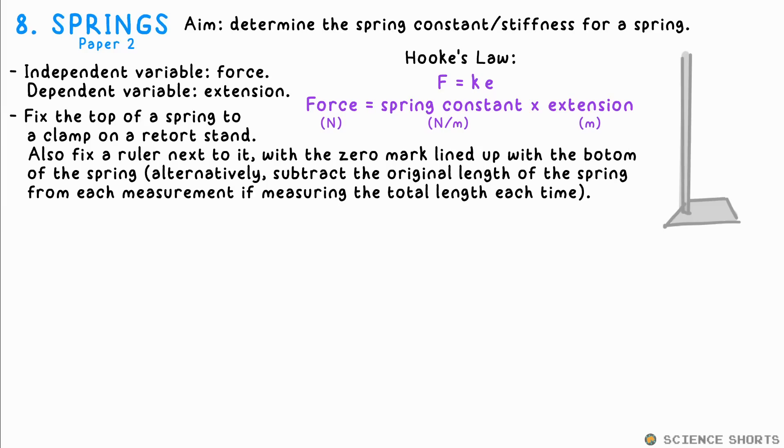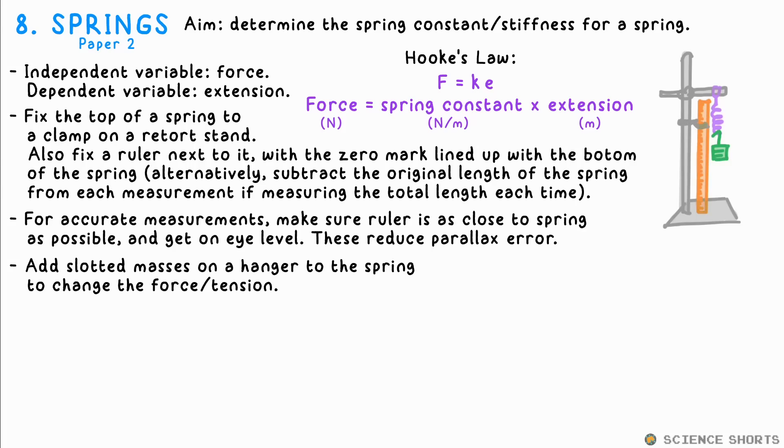Physics eight, springs. We can find the spring constant for a spring by fixing one end on a retort stand on a clamp, and hanging slotted masses of increasing mass to change the force on the spring, that's our independent variable, and measuring the extension, that's our dependent variable. The best way of measuring extension is to fix a ruler as close to the spring as possible with the zero mark lined up with the bottom of the spring. Then just measure where the bottom of the spring goes to when it's stretched. Multiply the mass by gravitational field strength, 9.8, every time to get the force.